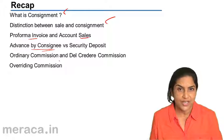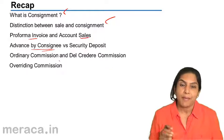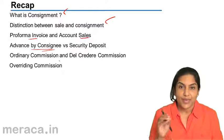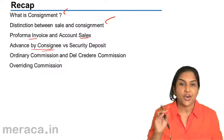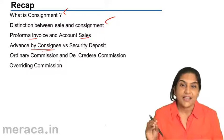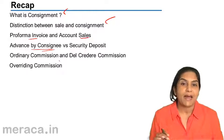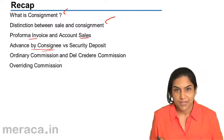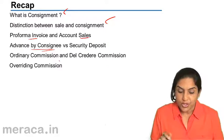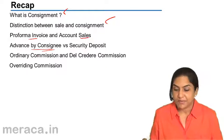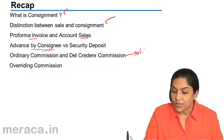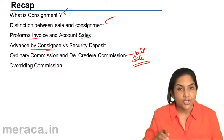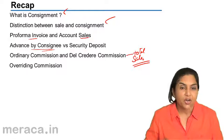In order to avoid such a situation, a del credere commission may be given by the consignor to the consignee. When a del credere commission is paid in addition to the ordinary commission, it means the consignee will be responsible for any bad debt losses arising from credit sales of the consignment. Both the ordinary commission and del credere commission are computed on total sales. Unless otherwise mentioned, del credere commission is also computed on total sales, not on credit sales.